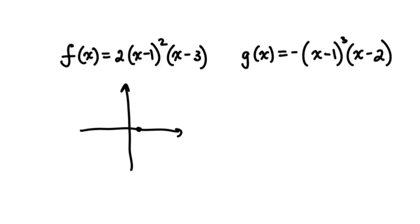It has an x-intercept of 1 that repeats twice, and an x-intercept of 3 that repeats once. When the function's x-intercept repeats twice, we see a bounce — the graph will reach the x-axis and bounce off of it, then continue on to the next x-intercept.